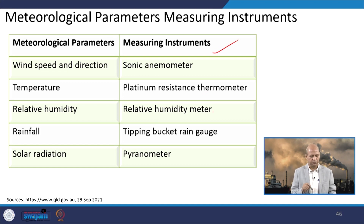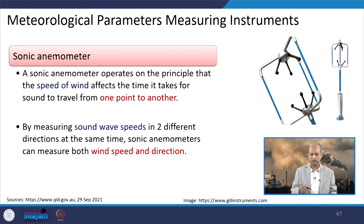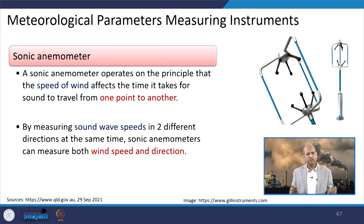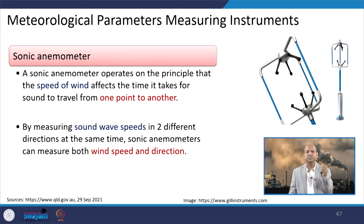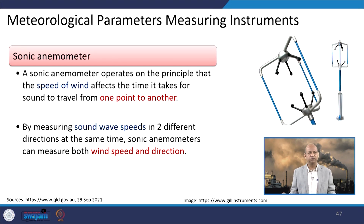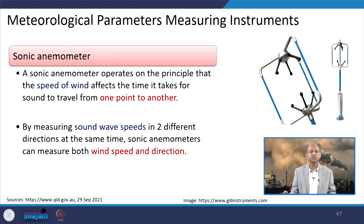For relative humidity, a relative humidity meter is used; for rainfall, a rain gauge; for solar radiation, a dedicated instrument. The sonic anemometer operates on the principle that the speed of wind affects the time it takes for sound to travel from one point to another — that is why it is named as such. By measuring sound wave speeds in two different directions at the same time, the sonic anemometer can measure both wind speed and direction.